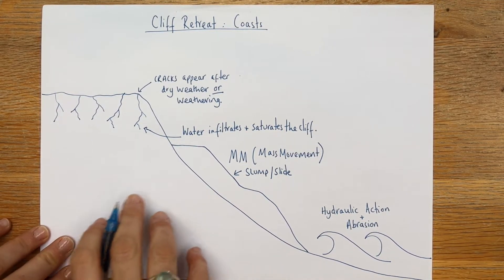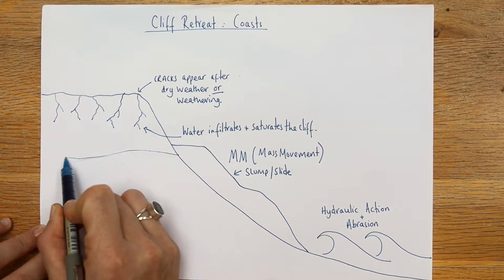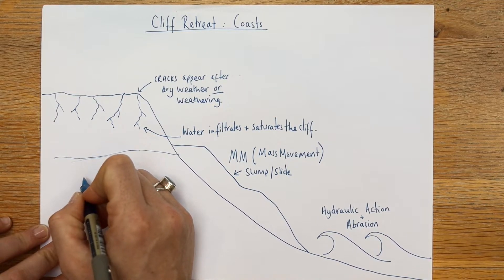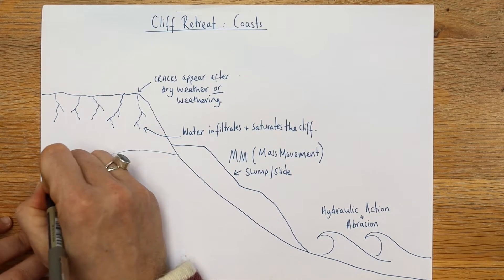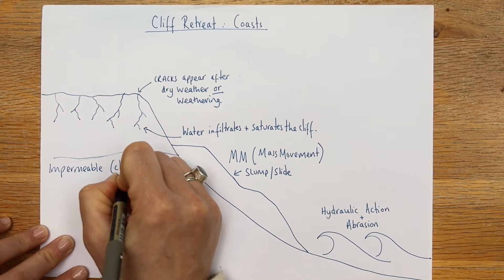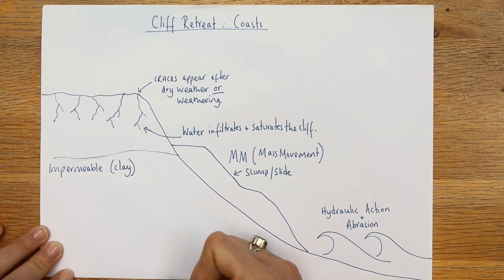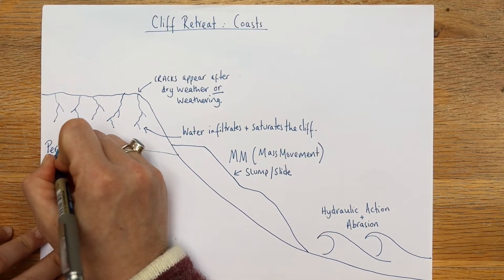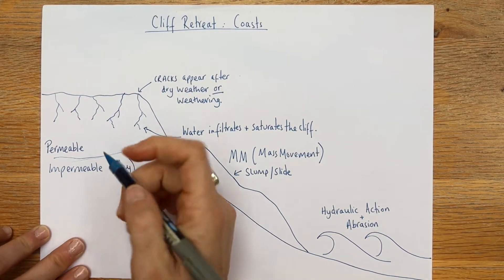Let's look at why this is happening. If you draw a line here — if this area up here is permeable, it's going to allow the water in. If we have an impermeable surface underneath, for instance clay, that's going to prevent the water going all the way down and through, and it's going to make this section heavy. So permeable or porous rock is going to allow the water to come in.